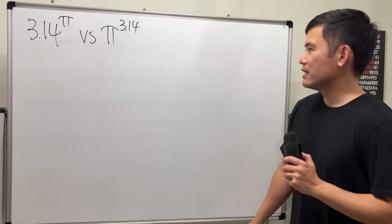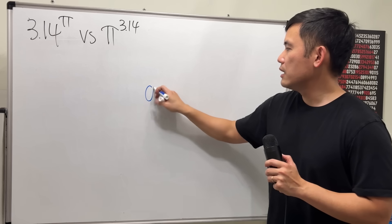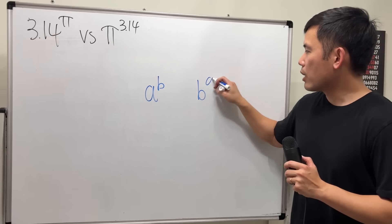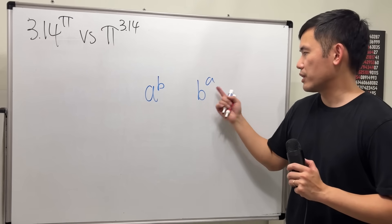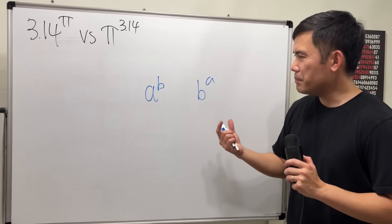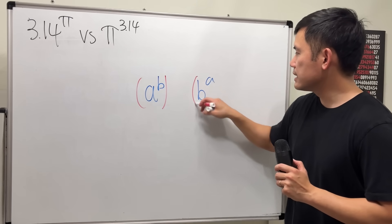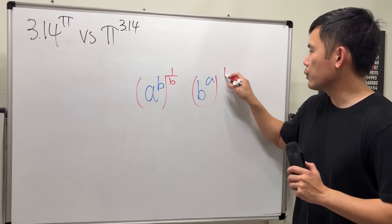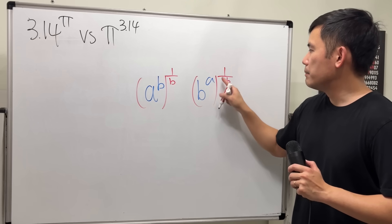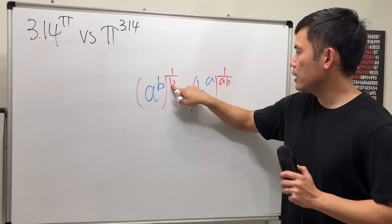But anyways, let's see how we can handle this. So here's the thought process. We're trying to compare a to the b versus b to the a. And the problem is that we have two variables. Likewise, this right here. I think it might be easier if we just handle one variable, right? So to get rid of this b, we can raise both sides to maybe 1 over b power so they cancel. Likewise, we do the same here. But on this side here, we will have to get rid of the a.